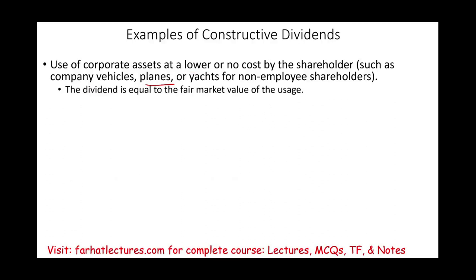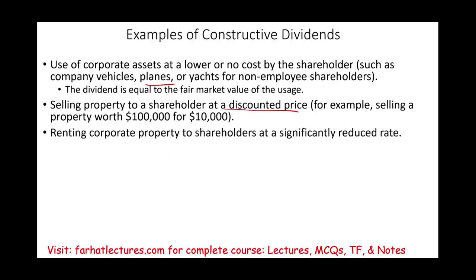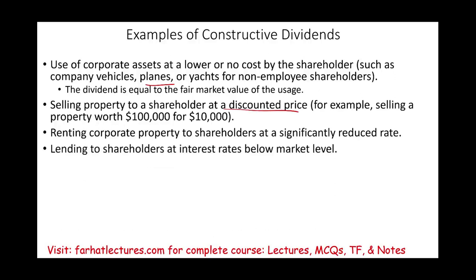Another example: selling property to a shareholder at a discounted price — for instance, selling a property worth $100,000 for $10,000. That $90,000 difference is considered a dividend. Renting corporate property to a shareholder at a reduced cost, whether it's a vehicle, boat, or plane. Lending to shareholders at an interest rate below market level — giving them a loan at 0% or 2% when the bank would charge 10% gives them a benefit that could be recharacterized as dividend.